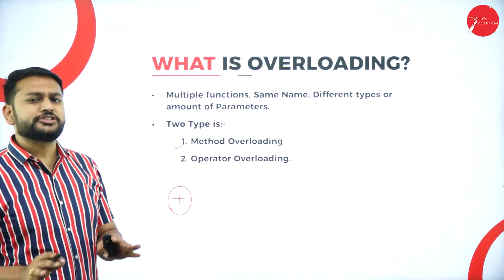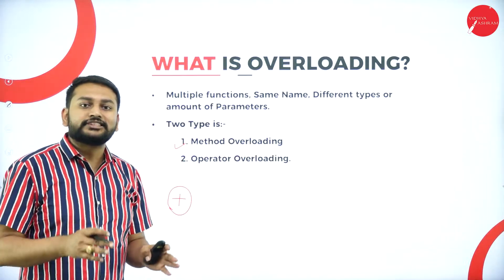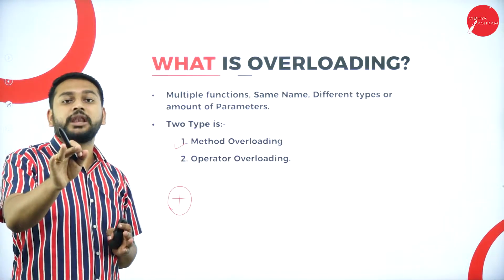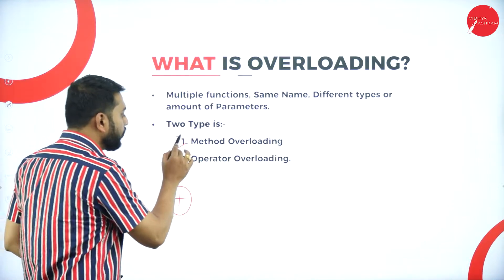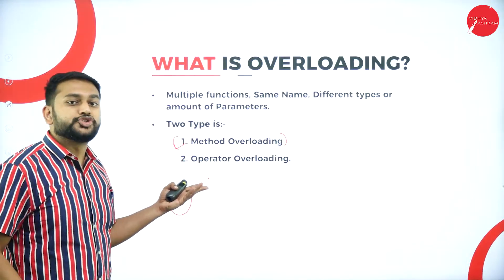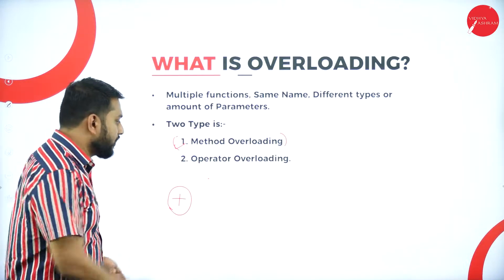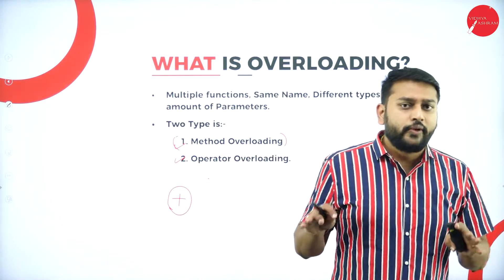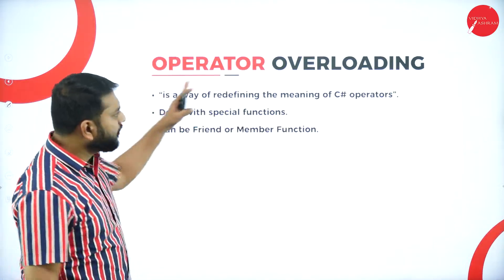Method overloading means you will have more than one method with the same name, different number of parameters, and different types of parameters — that is what I call method overloading. The second one is operator overloading. If you are changing the meaning of an existing operator in C#, that is what I call operator overloading. So we got a basic idea: when it comes to overloading, we have two types — method overloading and operator overloading.